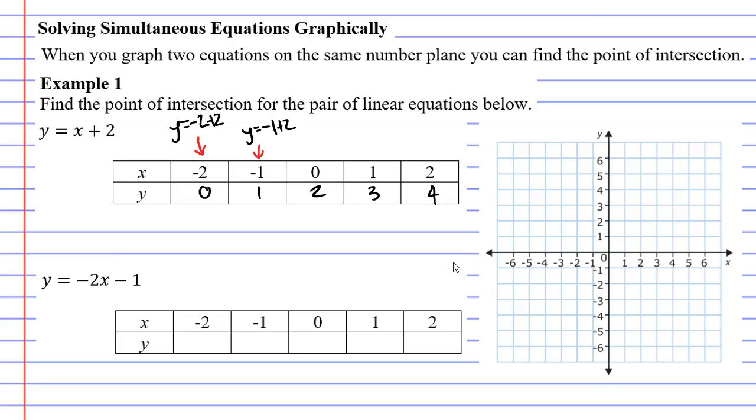Now I can plot this on my plane by looking at one column at a time. So when I look at this column, x is negative two and y is zero, which is this point here. When I look at the second column, x is negative one and y is one, which is this point here. And I keep going when x is zero, y is two.